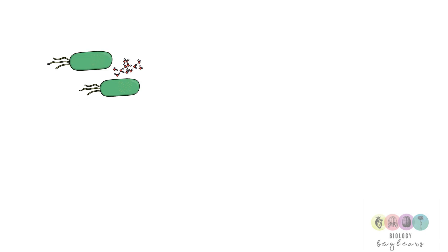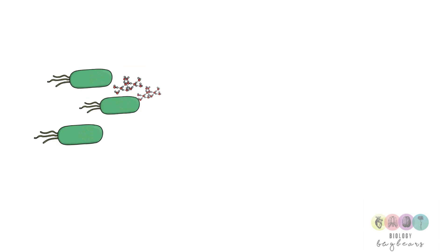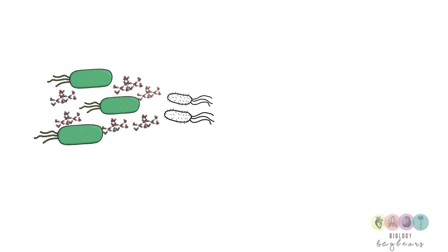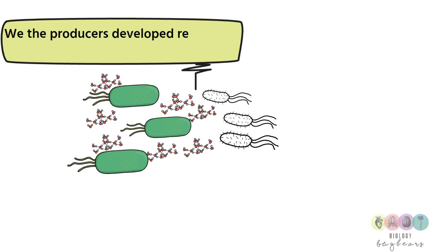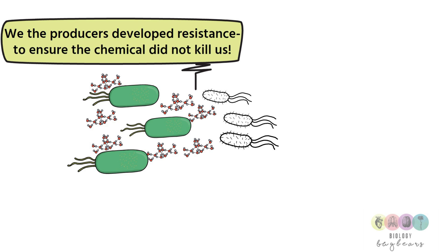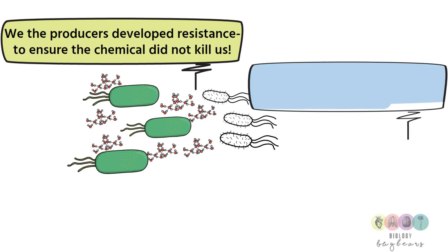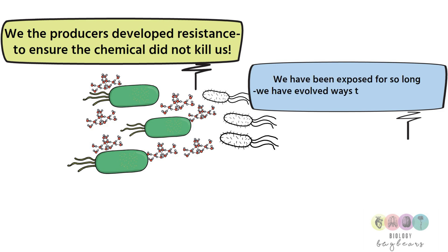So why do bacteria develop this resistance? Imagine a type of bacteria that happily produces antibiotics and uses these chemicals to target another type of bacterium — possibly to kill it. If you are the producer of the antibiotic, you have to be resistant, or else you risk being destroyed by your own chemical. And if you are the target of that antibiotic, you've possibly been exposed to it for so long that you've evolved ways to survive.